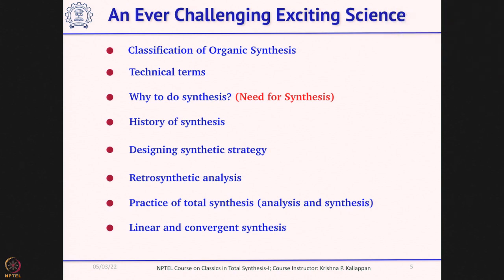I will introduce the concept of linear and convergent synthesis and then give lots of examples of total synthesis of complex natural products. This course is mainly for second-year master's students and first-year PhD students. By the time you come to this course, you should be aware of many organic reactions and should have some idea about retrosynthetic analysis. If you know this, it will be easy for you to understand this course.